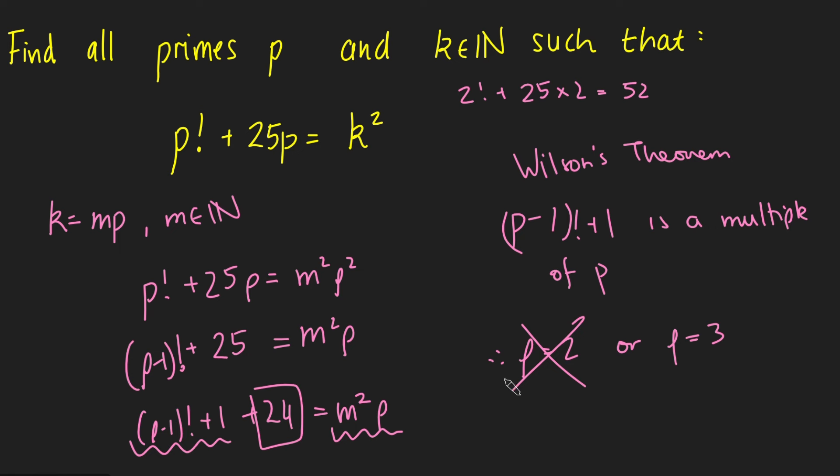So this isn't a solution. But if I plug in 3, I get 3 factorial, which is 6, plus 25 times 3, which is 75. And that's 81, and that is a square number.